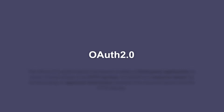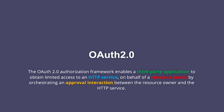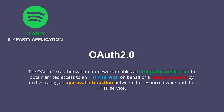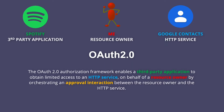Let's define OAuth 2.0 using that working Spotify and Google contacts example. Taken straight from OAuth's website, OAuth 2.0 is defined as an authorization framework that enables a third-party application to obtain limited access to an HTTP service. Spotify is that third-party application, and on behalf of the resource owner — myself — a handshake process called an approval interaction occurs between me and Google contacts, after which Spotify is granted access and can show me which friends are active on their application.